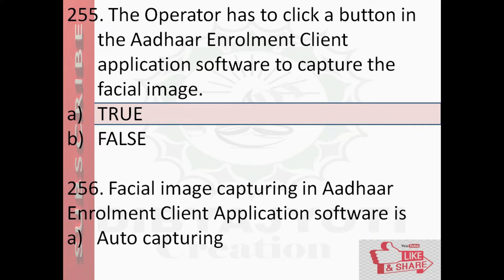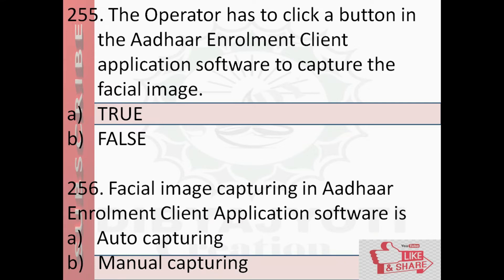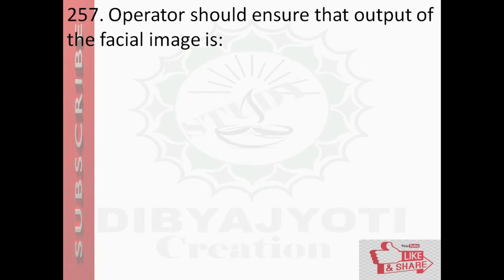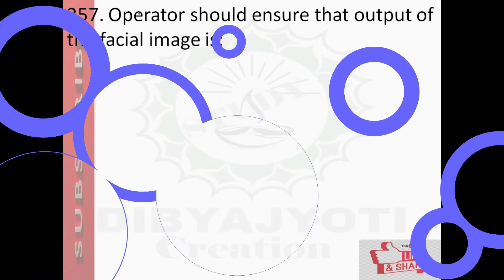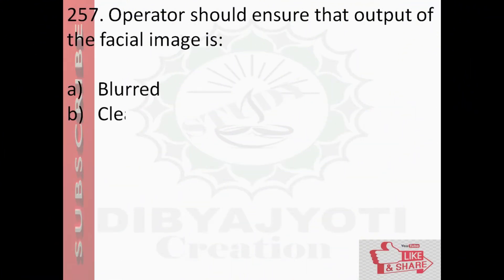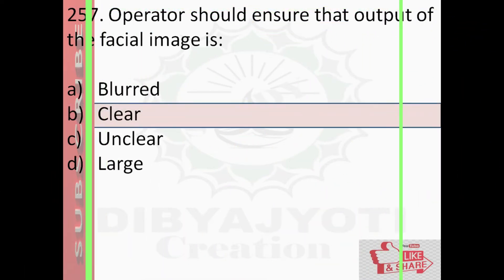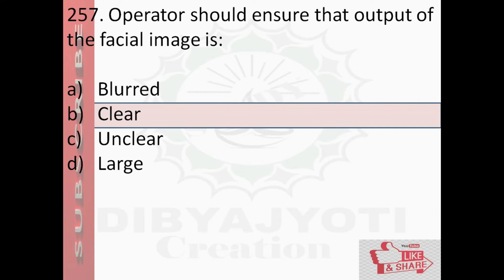Question number 257: The operator should ensure that the output of the facial image is — option A: broad, option B: clear, option C: unclear, option D: large. And the answer is option B: clear.